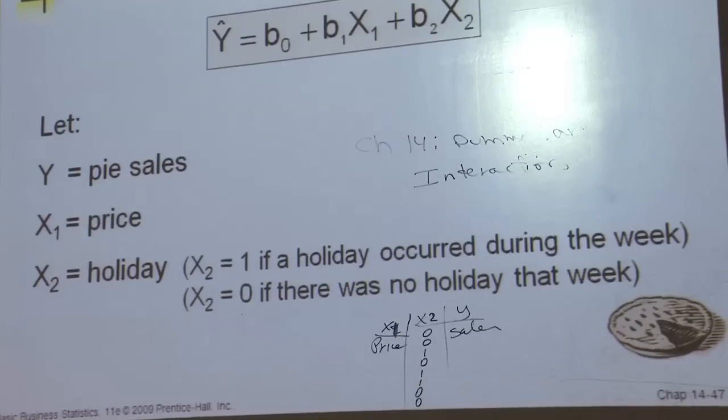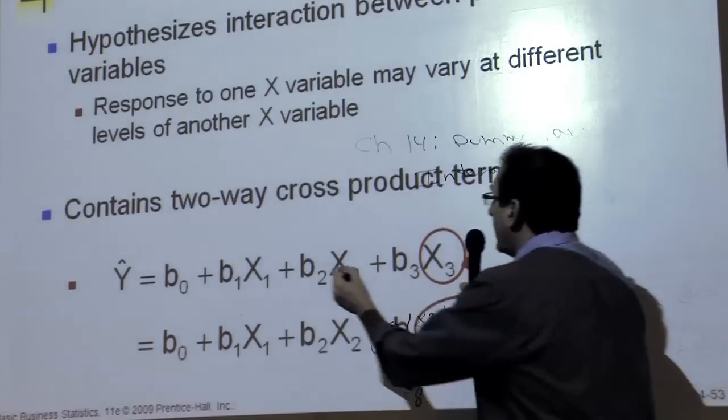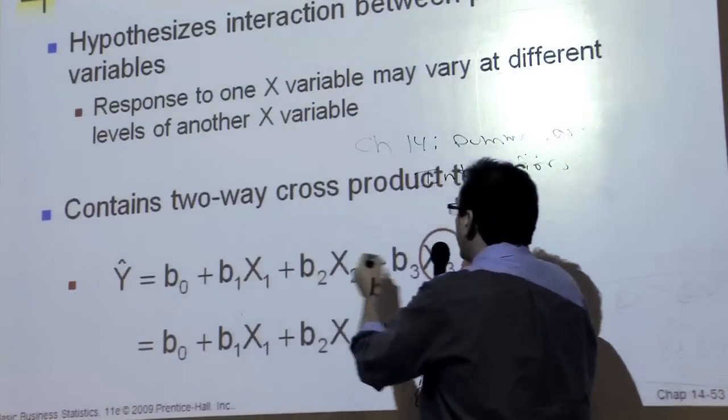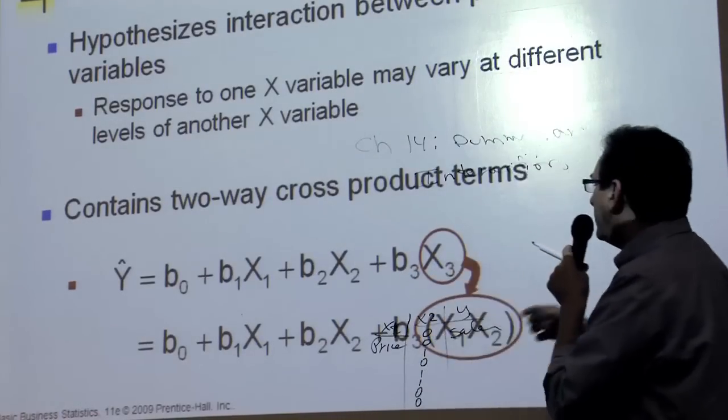So mathematically, it turns out to be very simple, and a few slides later in chapter 14, there's how you implement the interaction. Literally, you multiply one variable in the equation by the other to create a third variable, x3, but x3 is merely the product of x1 times x2.